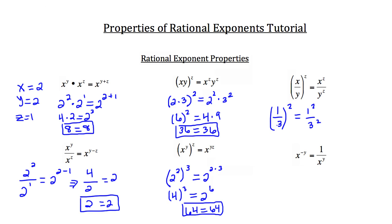To test it: 1 third squared is really 1 third times 1 third. Since we multiply across when multiplying fractions, 1 times 1 is 1 and 3 times 3 is 9. So 1 third squared equals 1 over 9. On the right side, 1 squared is 1 over 3 squared, which is 9. So this problem checks out as well.